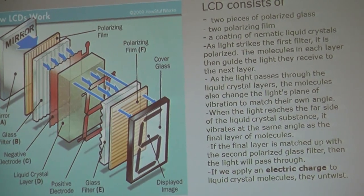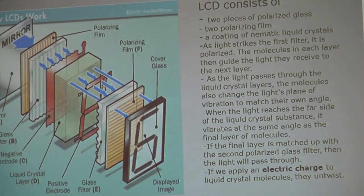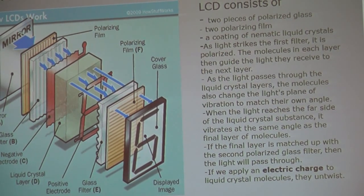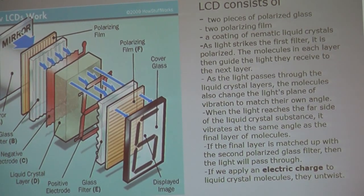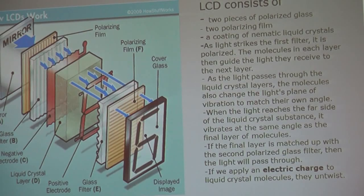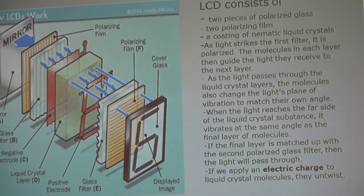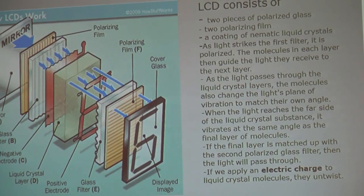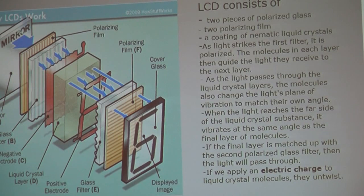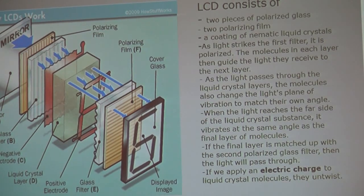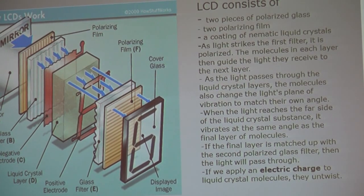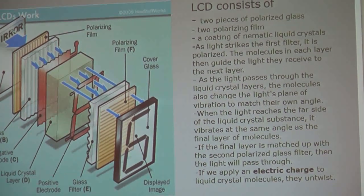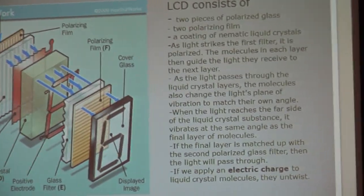When the light reaches the far side of the liquid crystal substance, it vibrates at the same angle as the final layer of the molecules. And in the final layer, it matches up with the second polarized glass filter, then the light will pass through. If we apply an electric charge to the liquid crystal molecule, it will untwist and then the image will be displayed on the last cover glass.